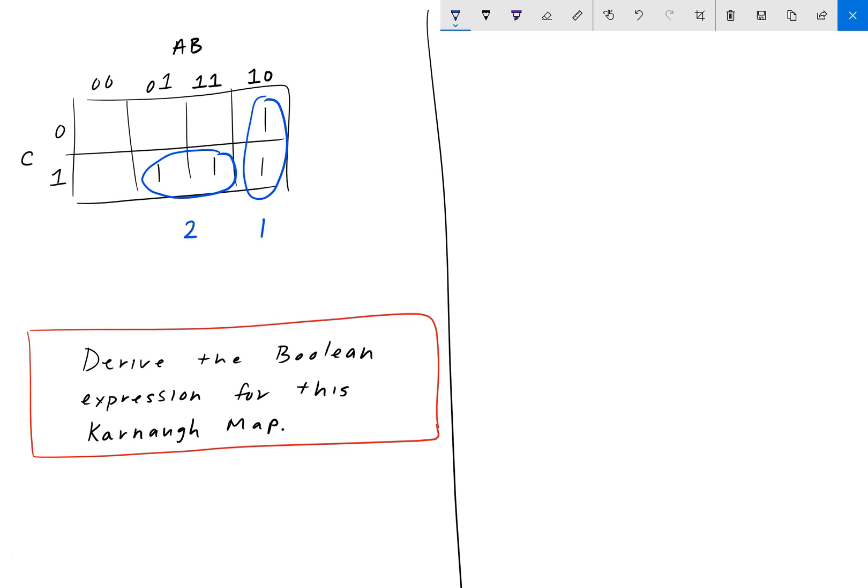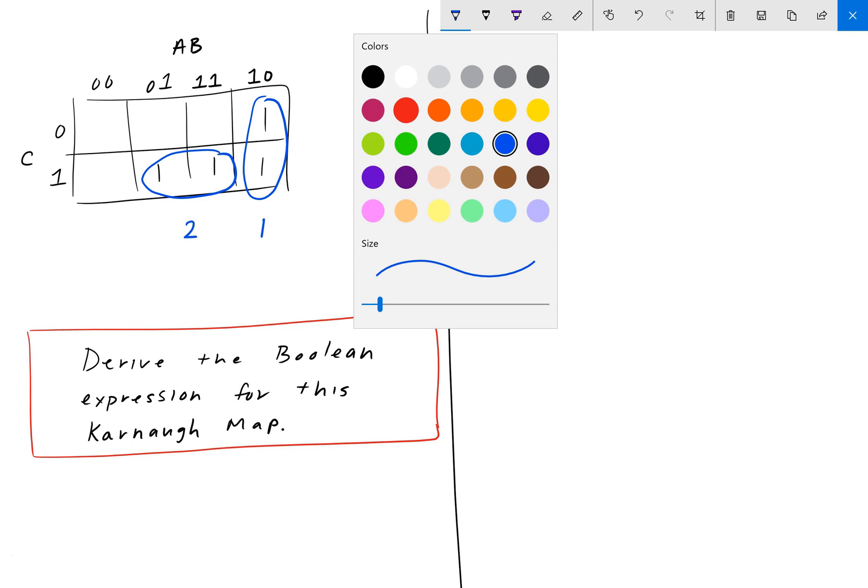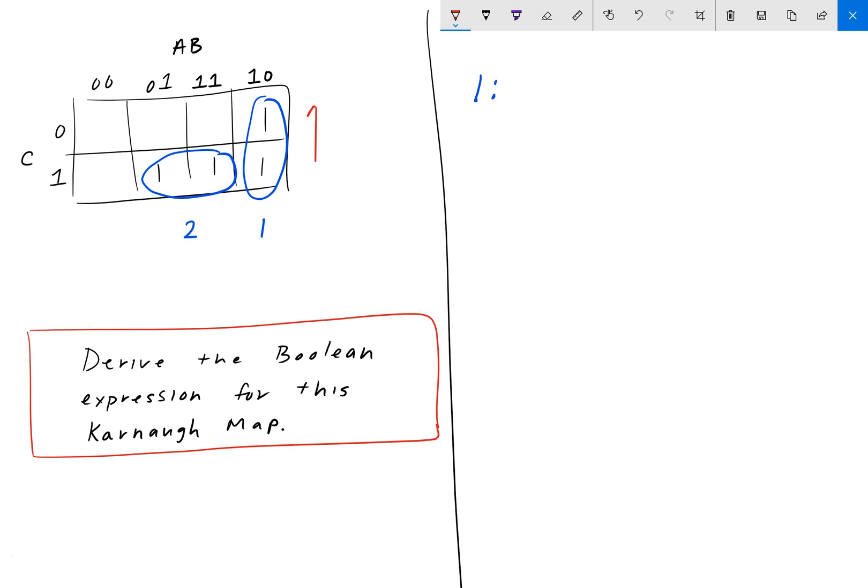Once we have our groups, what we want to do is find the variable in that specific group that doesn't change. So if we're looking at group 1, we see that C changes from 0 to 1 as you go up and down the group here. And we see that A and B, well A and B not, since it's a 0, don't change.